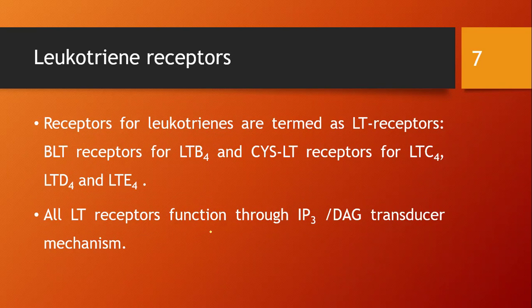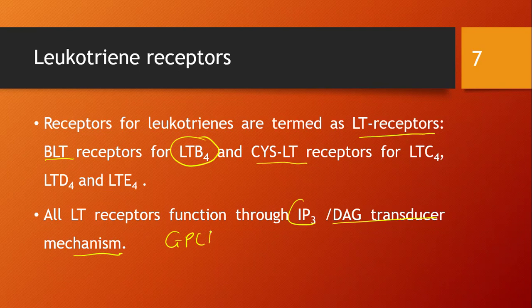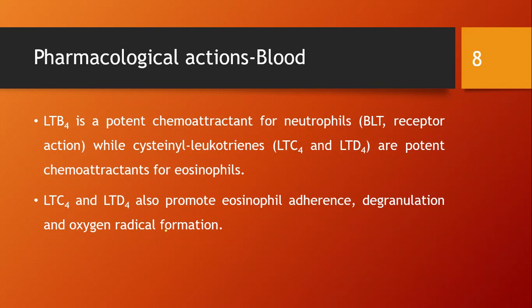Leukotriene receptors are termed LT receptors: BLT receptors are for LTB4, and CysLT receptors are for LTC4, LTD4, and LTE4. All LT receptors function through the IP3/DAG second messenger mechanism — they are all GPCRs.